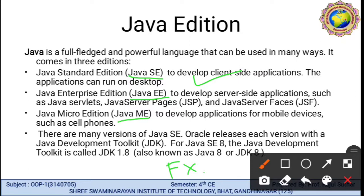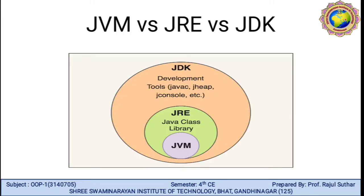Java Enterprise Edition is used to develop server-side applications such as Java Servlet, JavaServer Pages JSP, and JavaServer Faces JSF. Java Micro Edition is used to develop applications for mobile devices such as cell phones. There are many versions of Java SE. Oracle released each version with a Java Development Kit JDK — for Java SE 8, the Java Development Kit is called JDK 1.8, also known as Java 8 or JDK 8.